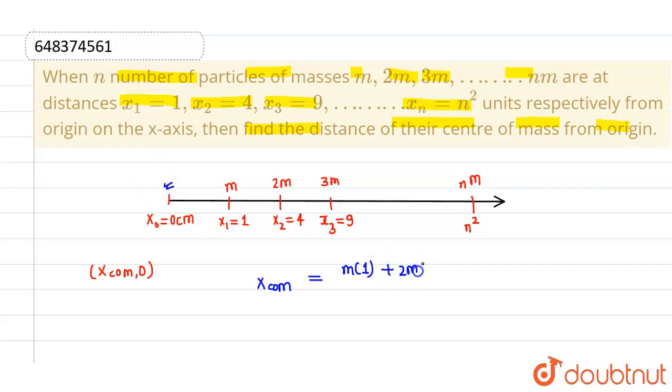m(1) + 2m(4) + 3m(9) + ... + nm(n²) divided by total mass, which is m + 2m + 3m + ... + nm.